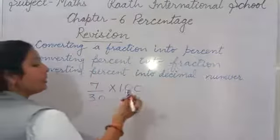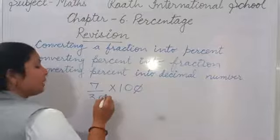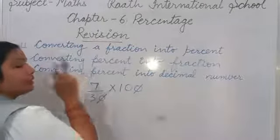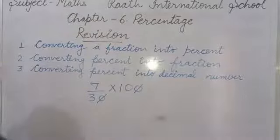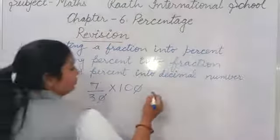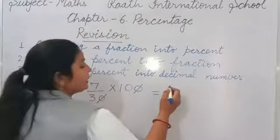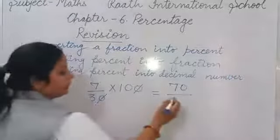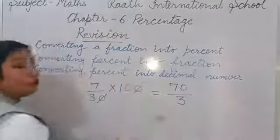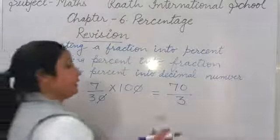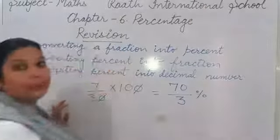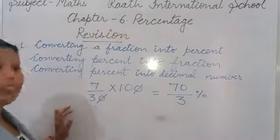So how we will solve 7 upon 30? We cancel 0 by 0. In the 3 times table we don't have 10 or 7. So numerator multiplied by numerator, denominator by denominator: 7 tens are 70, and in the denominator we have 3. So it becomes 70 upon 3 percent.